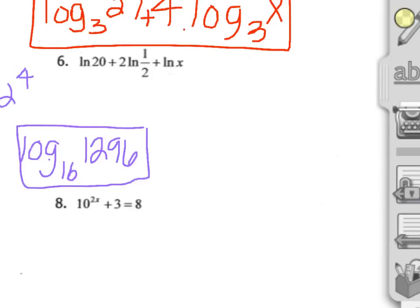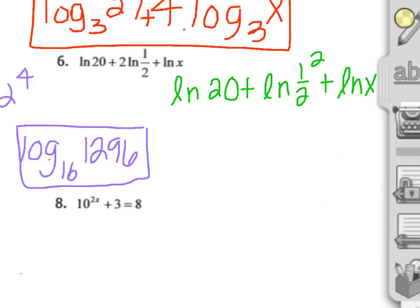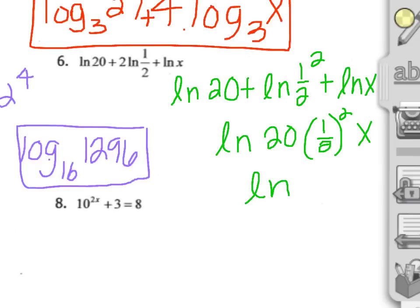Number 6 is another condensing one. The first thing I would need to do is make this ln of one half squared. Now since I have addition, I can write these all in terms of multiplication. I know one half squared is one fourth, and 20 times one fourth is 5, so our final answer here is ln of 5x.